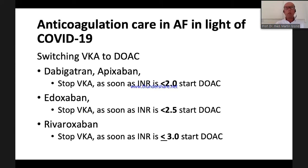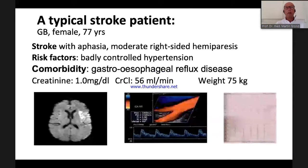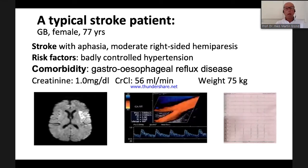That was a short comment on COVID and anticoagulation. Now let's go to a patient case. This was one of my patients — a 77-year-old woman who had a stroke with aphasia and moderate right-sided hemiparesis. She did well after two weeks. Risk factors include poorly controlled hypertension and comorbidities such as reflux disease.